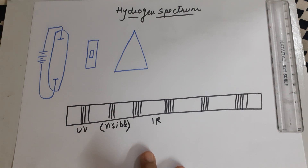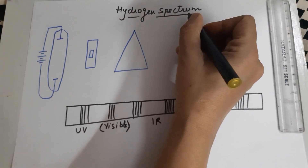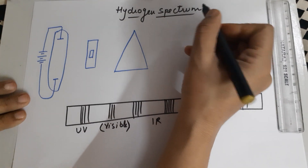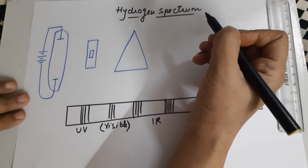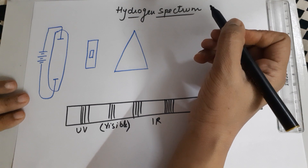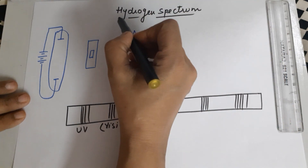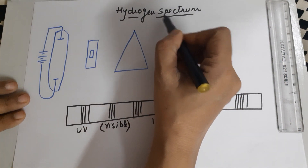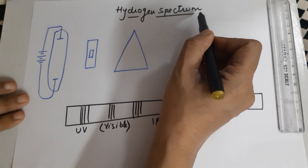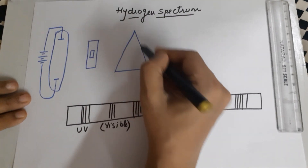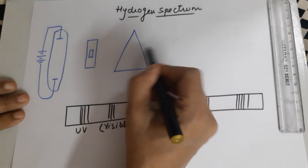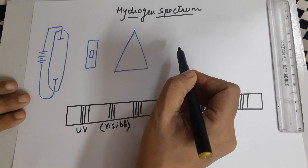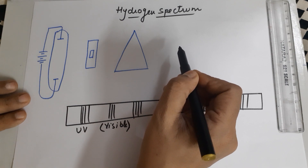Good morning students. Today we'll be doing a topic called hydrogen spectrum. This is part of class 11 CBSE unit 2, structure of atom. Since we're talking about spectrum, you need to pass the radiation through a prism so that it gets split into its components.